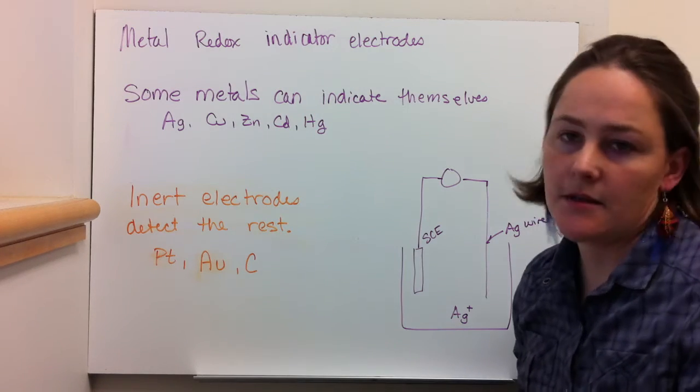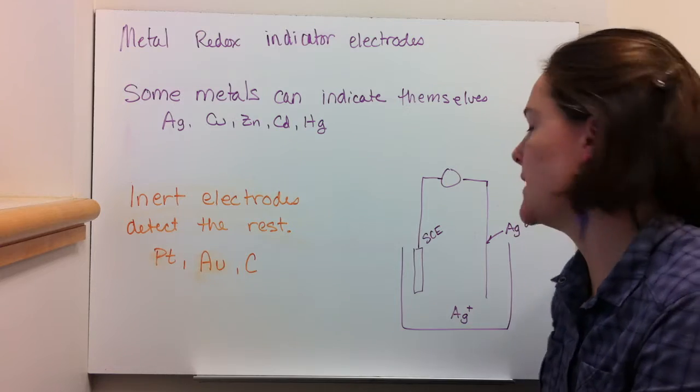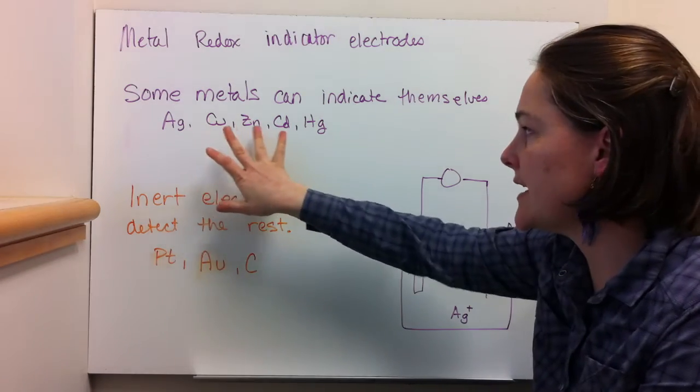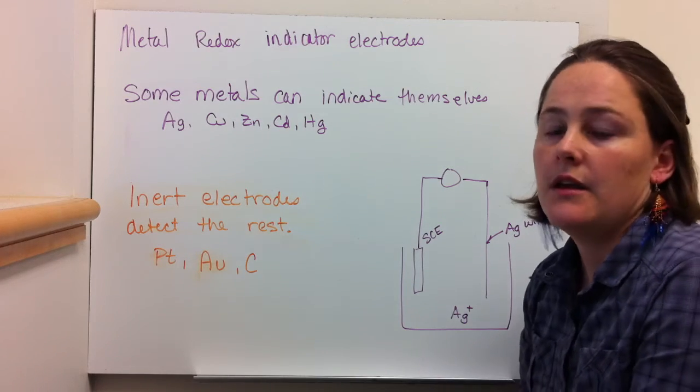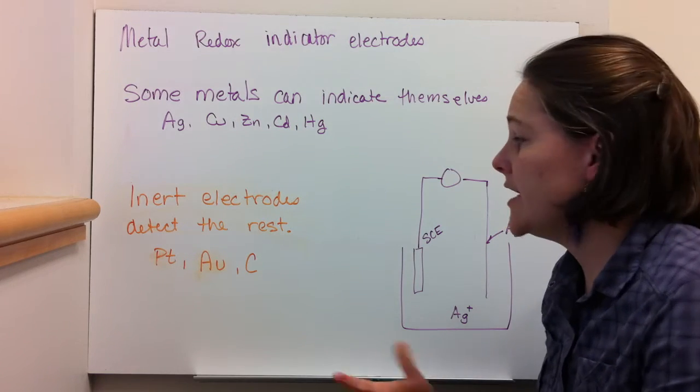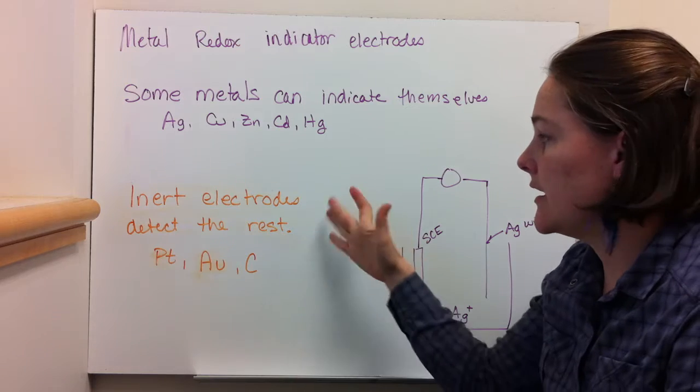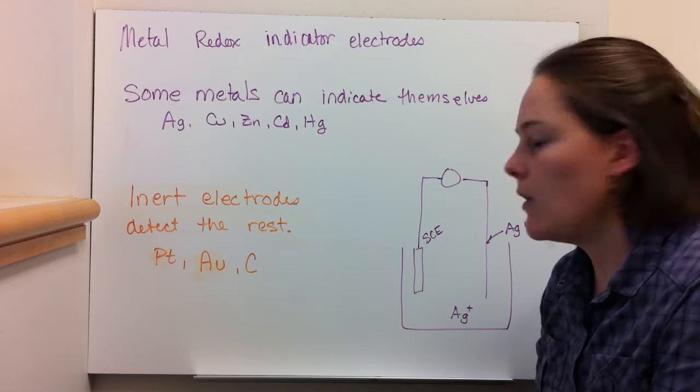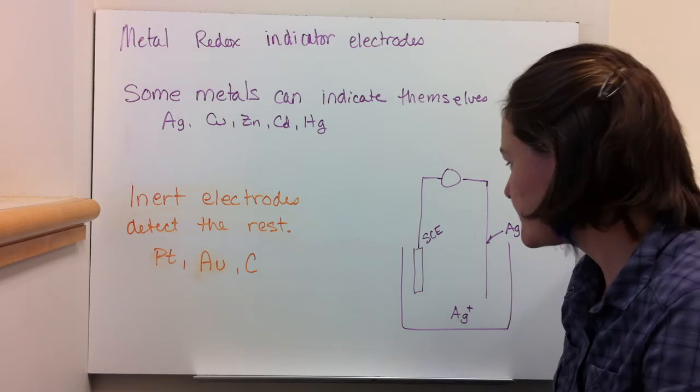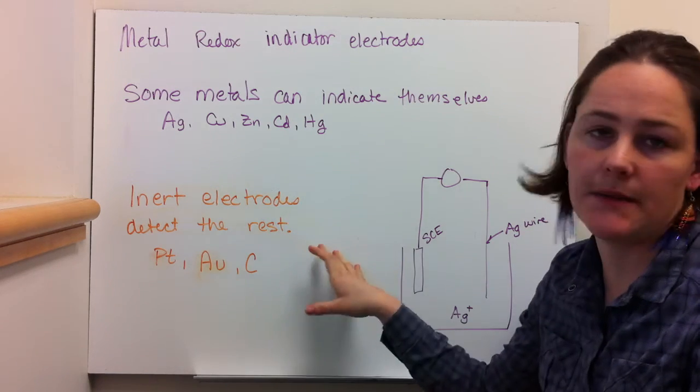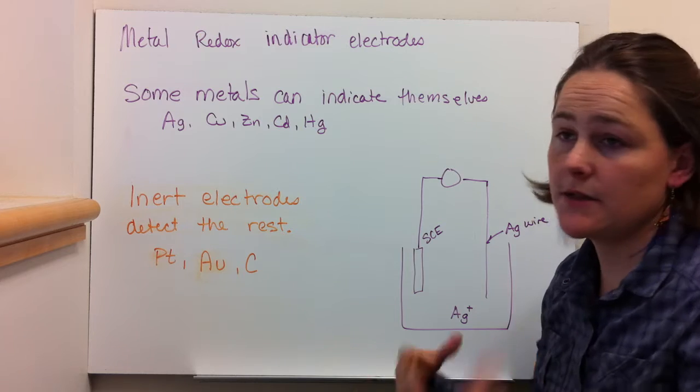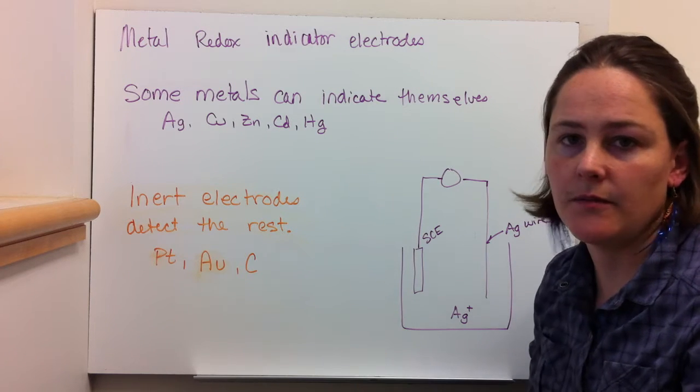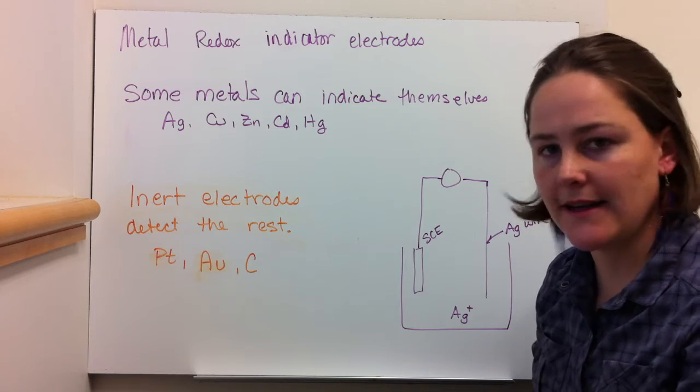Some metals can indicate themselves. We've talked about silver. Silver can indicate itself. Copper, zinc, cadmium, and mercury. Everything else needs to use an inert electrode, something like platinum, gold, or carbon.